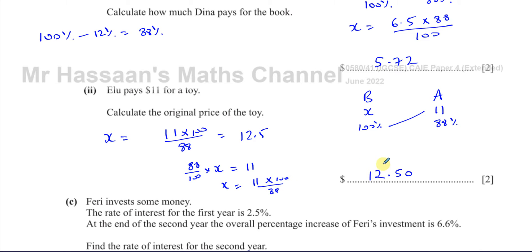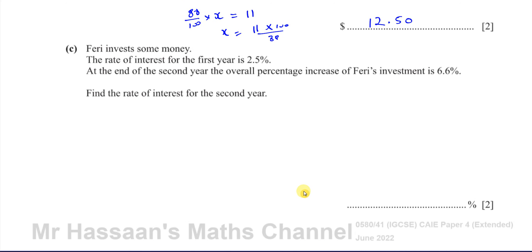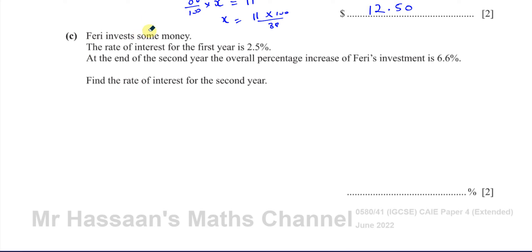Now part c — this is the part of the question that was specifically requested. Ferry invests some money. The rate of interest for the first year is 2.5%, and at the end of the second year the overall percentage increase of Ferry's investment is 6.6%. Find the rate of interest for the second year. So the first year interest rate was 2.5%, the second year is unknown, and the overall two-year percentage increase is 6.6%.